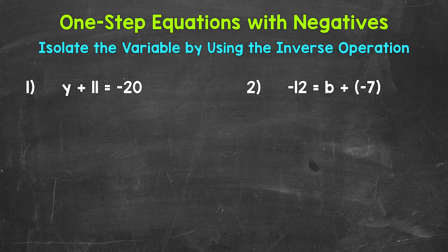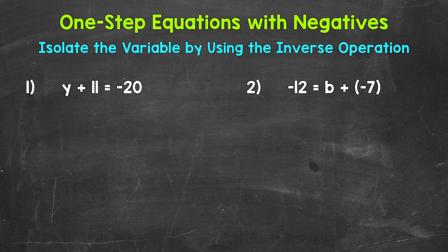When we solve one-step equations with negatives, we solve them the same way we solve one-step equations that have only positives. We want to isolate the variable, which means get it by itself. And we do this by using the inverse operation, which means the opposite operation. Basically, we want to undo whatever is being done to the variable so that the variable is by itself on one side of the equation.